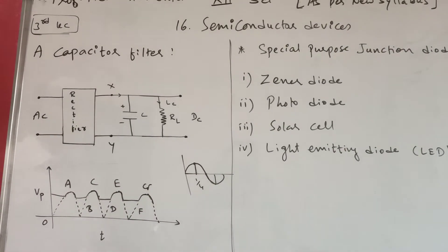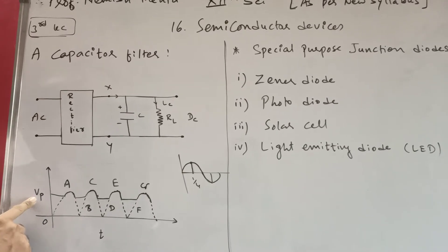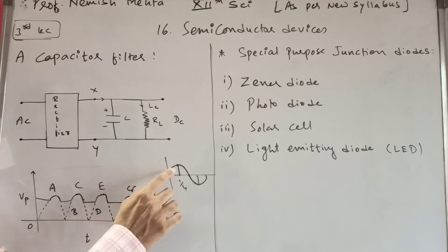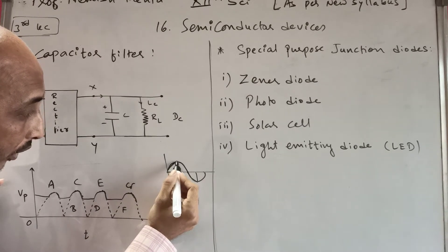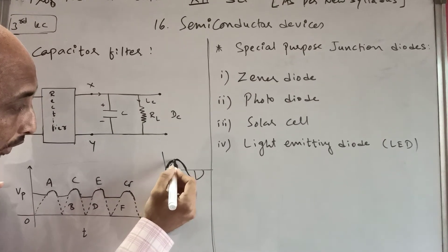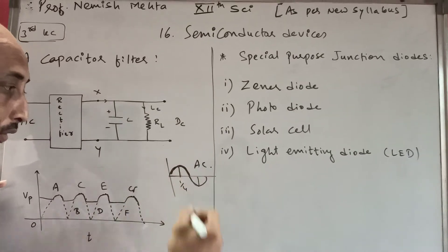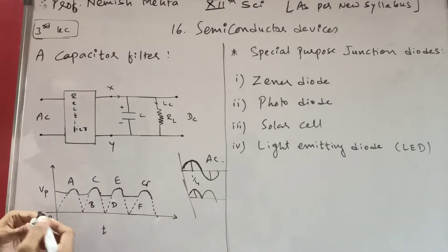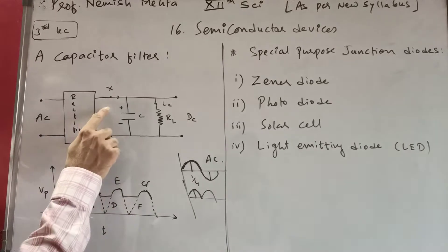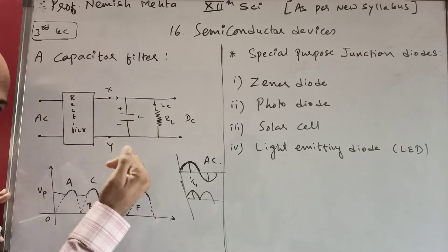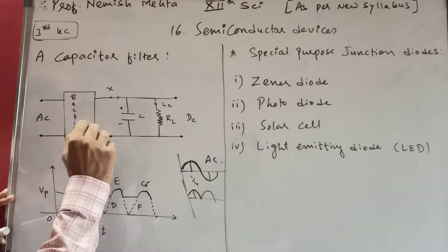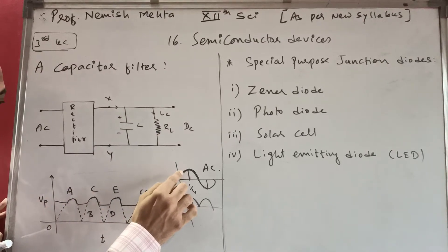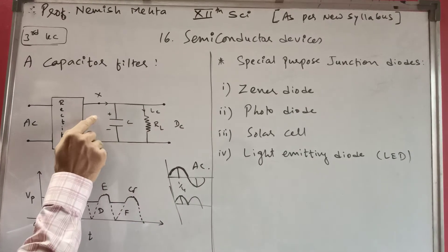At one-fourth of the cycle, the voltage reaches its highest peak value Vp. After this peak at one-fourth cycle, the current increases and flows into the capacitor. The capacitor charges to its highest value and then discharges through the load resistance, giving output. When the current decreases after the one-fourth cycle, the capacitor discharges.